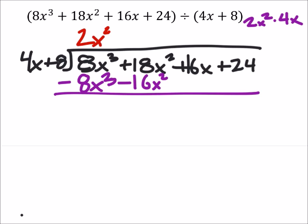So let's go ahead and operate on these. First, we've got this 8x cubed minus 8x cubed, which gives us 0. And we don't really have to show that, right?